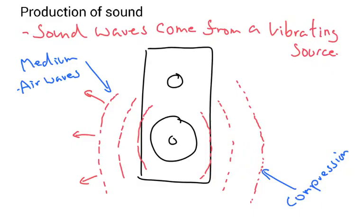The production of sound: sound waves come from a vibrating source, such as this speaker here. The medium that you can hear is air waves. Sound can be transmitted through air. The speaker moves forwards and backwards, and as it moves forward it pushes or compresses the air. That compression moves forward until it gets to your ear.